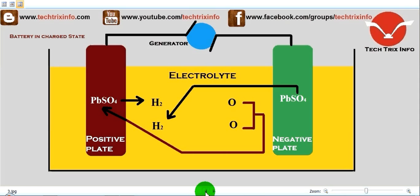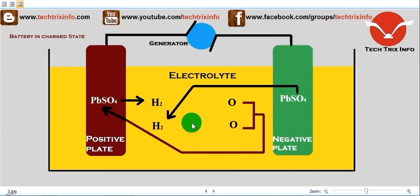While the battery is getting charged, electrons are forced into the negative plate and removed from the positive plate. To achieve this, an electric current is forced through the battery in the opposite direction to that of the discharge current flow. As a result, the water in the electrolyte breaks down into hydrogen and oxygen.